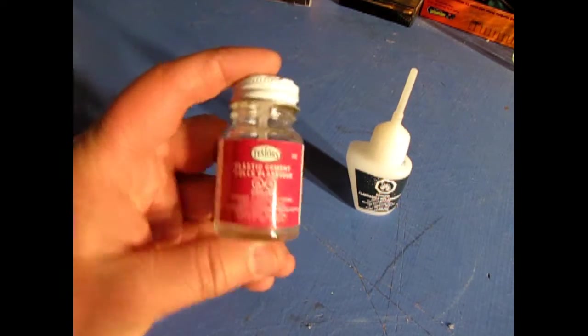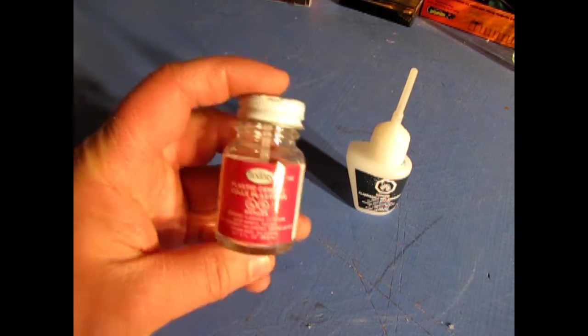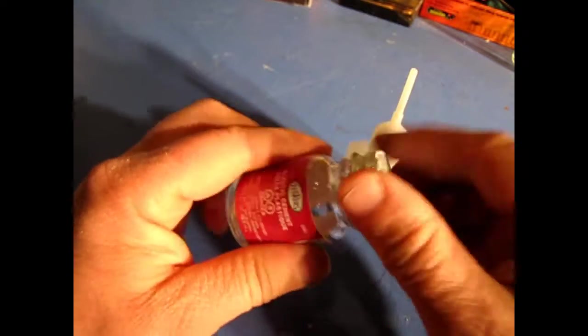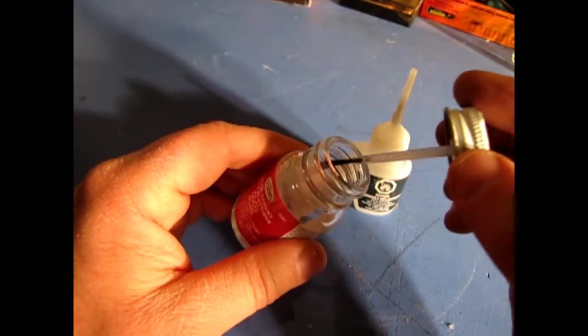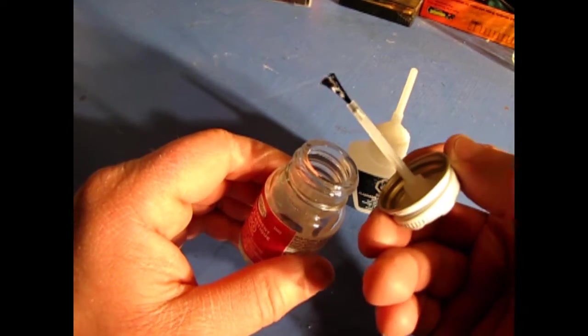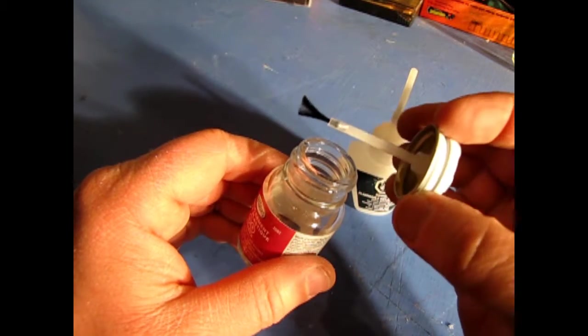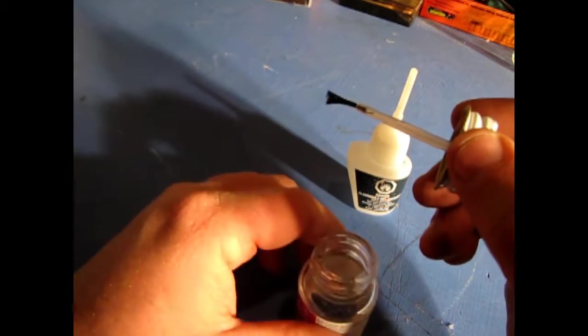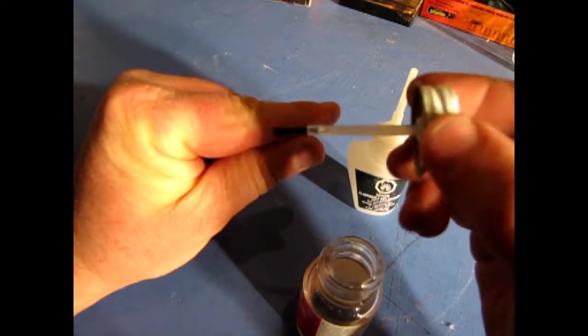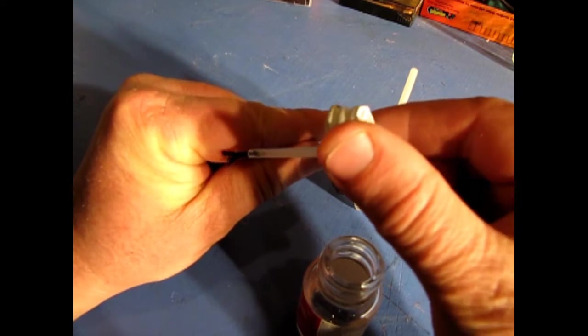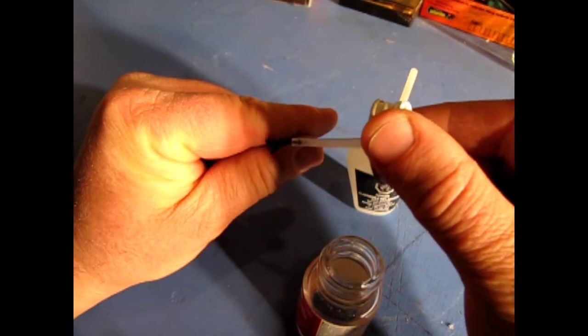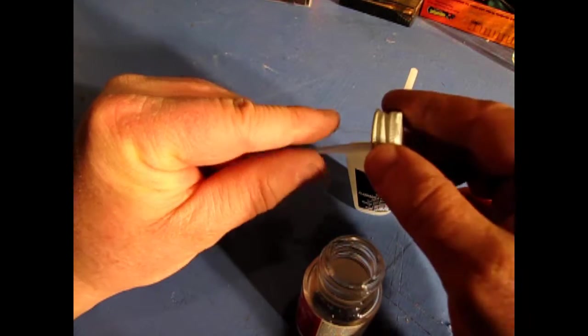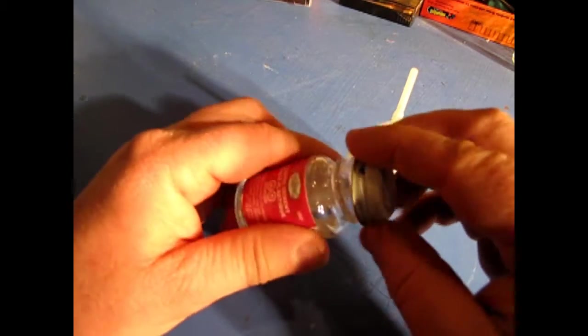Now this is plastic cement from testers. Unfortunately, this bottle I've used up. But this one has a nice brush. And when you're doing those long lines down your warp engines and around your primary hull, you want to take the brush with the glue on it and go right down those lines. And the liquid glue will run in between the two pieces and glue your kit together.